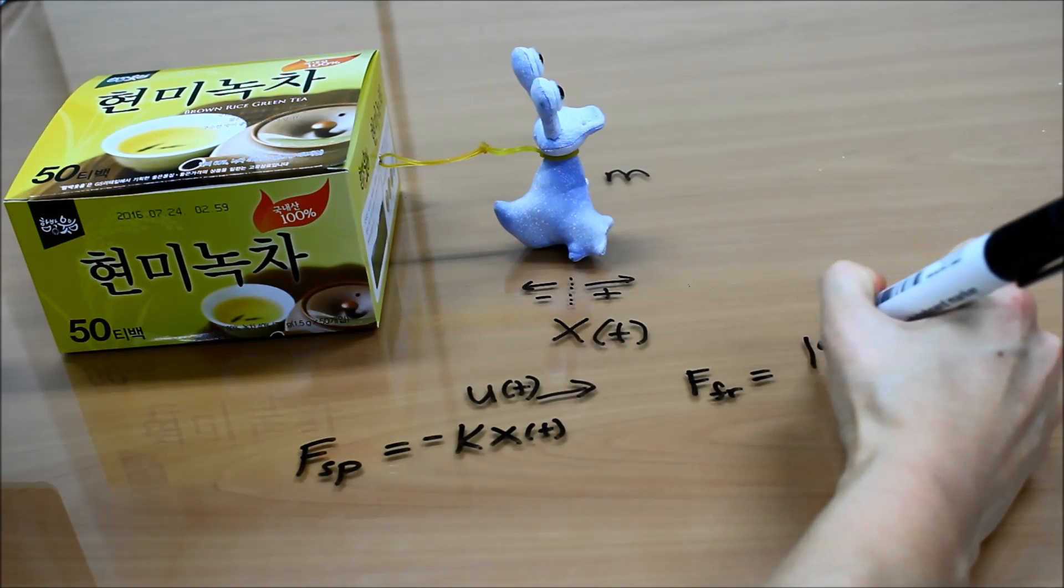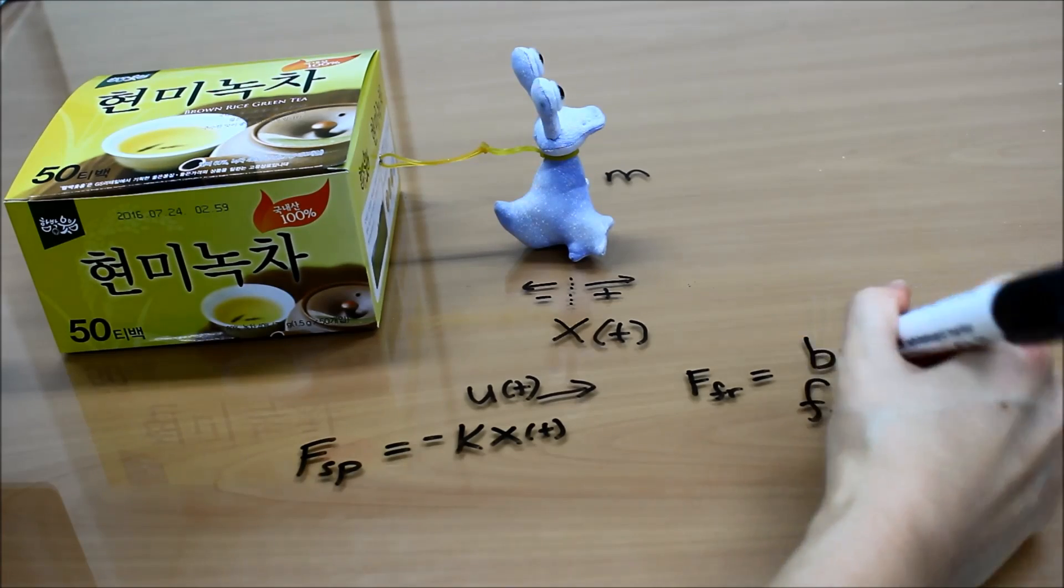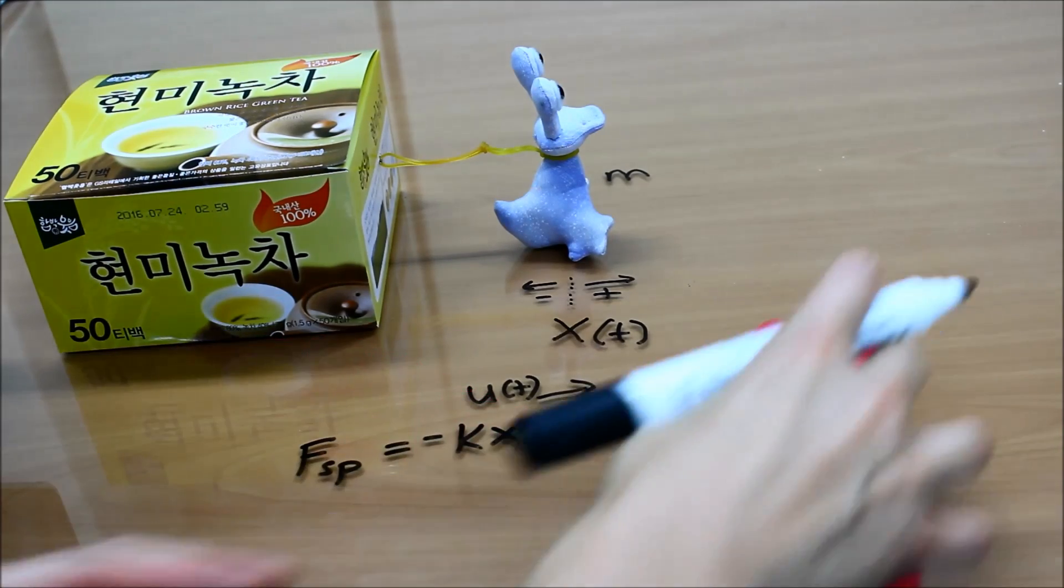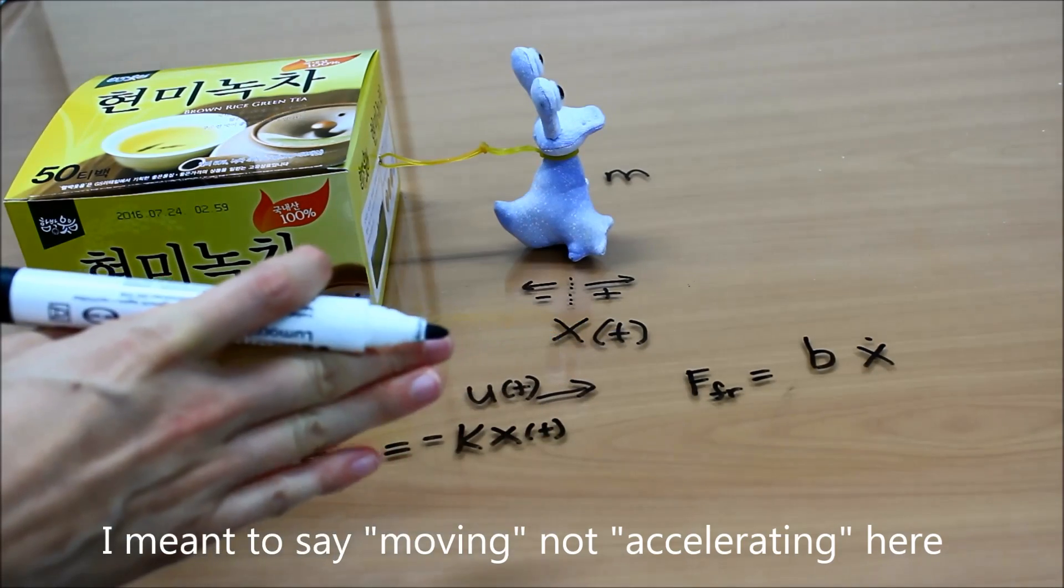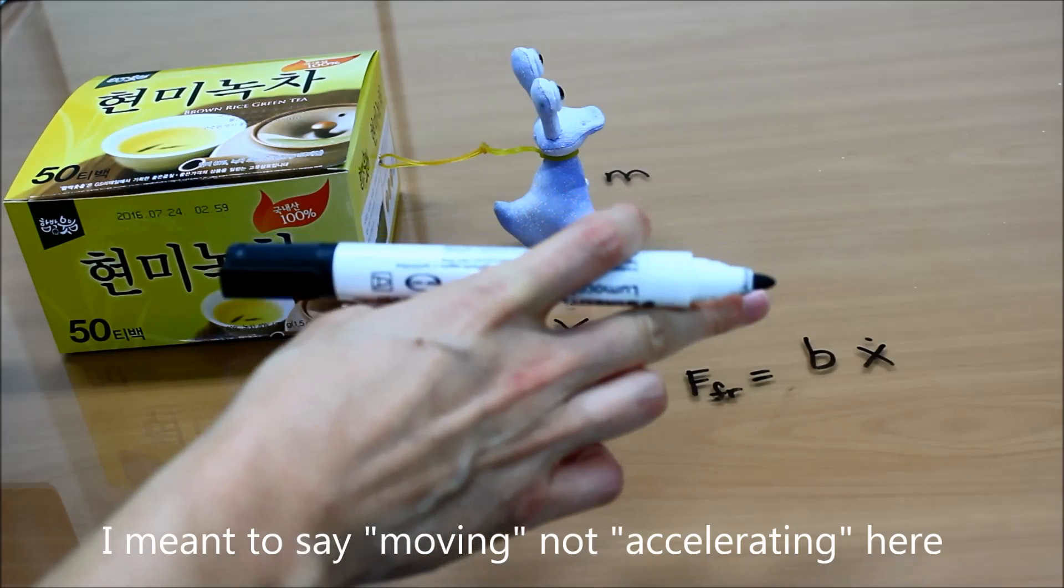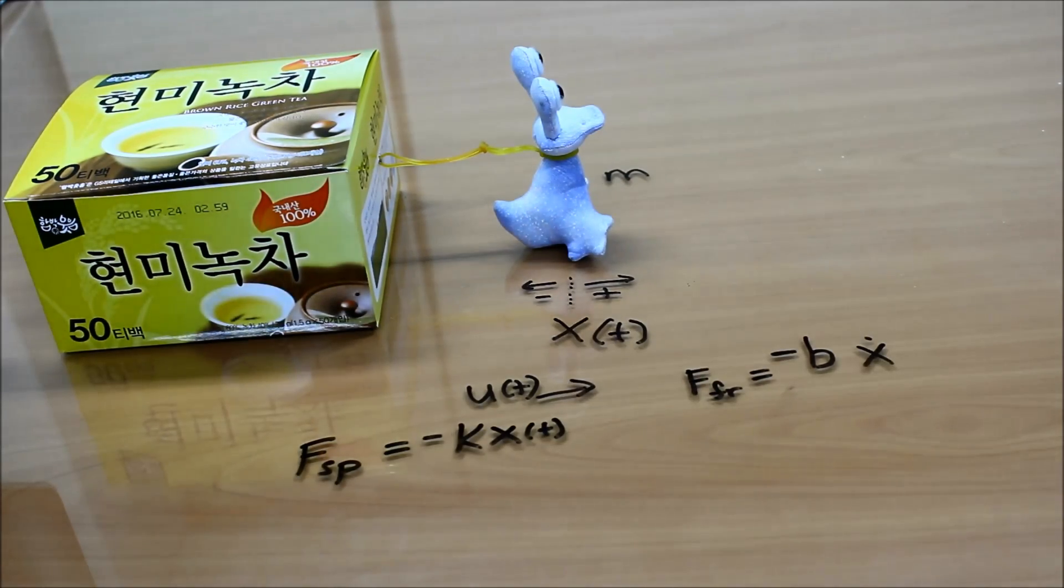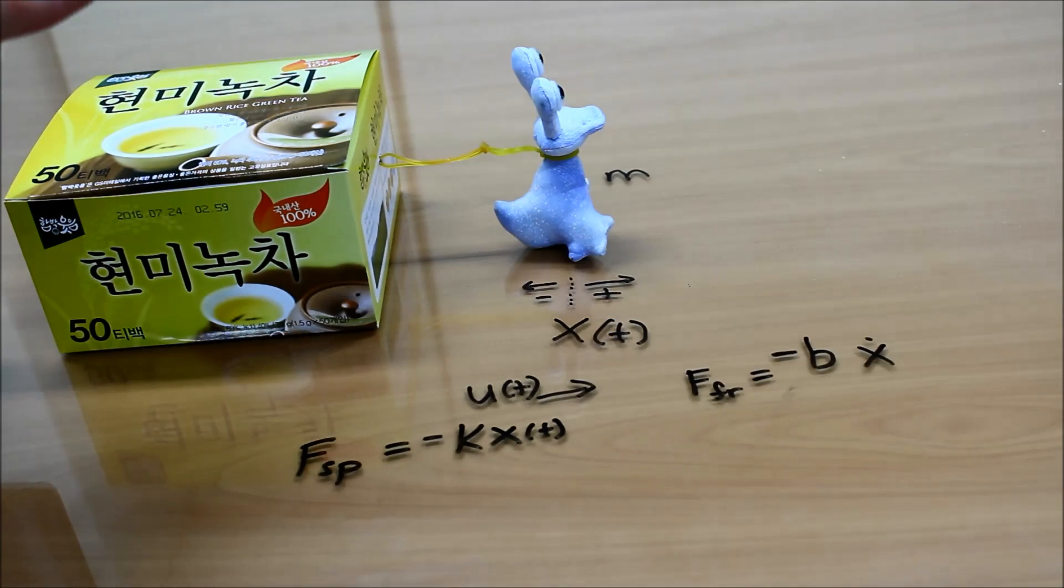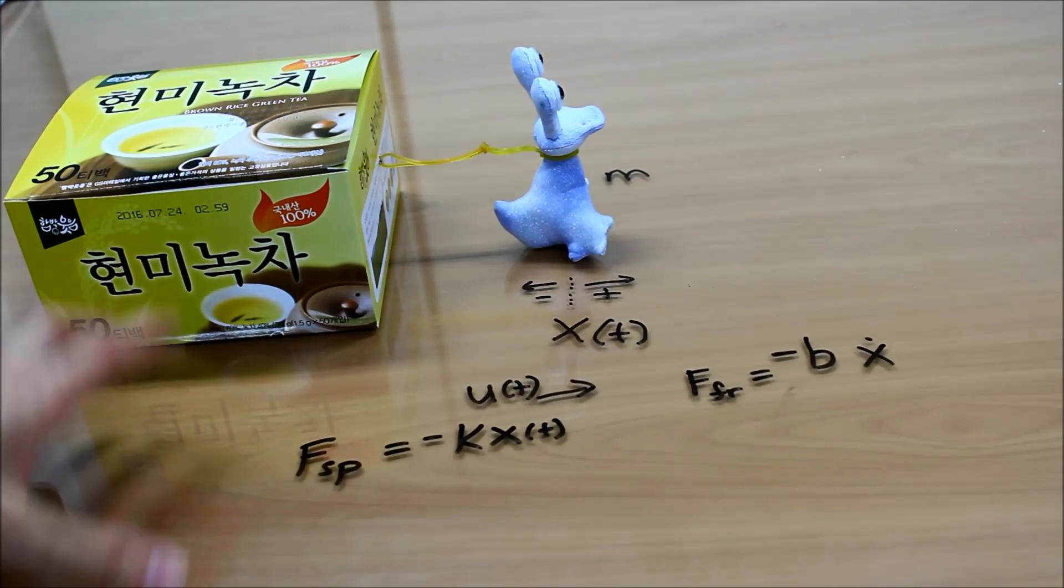And we need to have some coefficient. I'm going to use b here. The book uses f_v, but I'm just going to use b. And the direction here matters too. So if we're accelerating in the positive direction, our friction is going to be negative. So we actually need a negative here as well. So these are the basic forces that are acting upon our system here. And we're going to go back up to the board and use these equations to actually derive a transfer function.